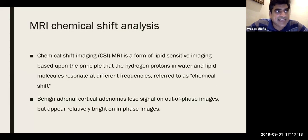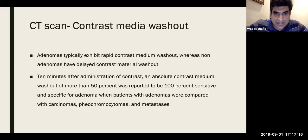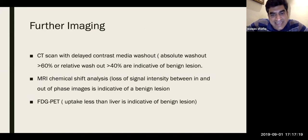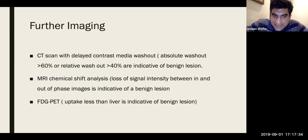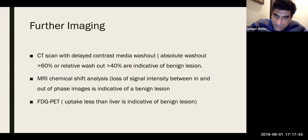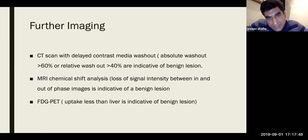The third test is FDG-PET: if uptake is less than liver, it is indicative of a benign lesion. So for indeterminate nodules you can choose any of three options — CT delayed washout, MRI chemical shift analysis, or PET scan — all giving similar results. If criteria are fulfilled it's benign; if not, it could be adrenocortical cancer or pheochromocytoma, and MDT discussion is needed.